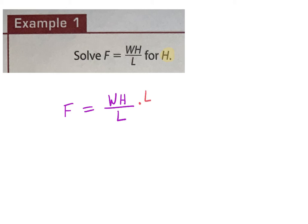I'm going to multiply both sides by L. When I do that, on the right-hand side those cancel out to ones, so I have just W and H. On the left-hand side, I have F times L. I'm trying to get H by itself, so then I look and say, what operation is happening between the W and the H? Multiplication.